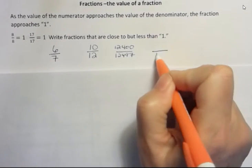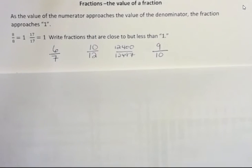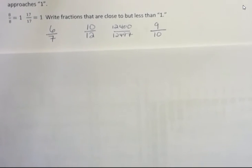But that's what I want you to realize. Whenever you have a denominator, looking at the top you can tell, oh, that's pretty close to 1. We're getting pretty close to 1 there. We're only 1 away. So that's the idea of the value of a fraction.